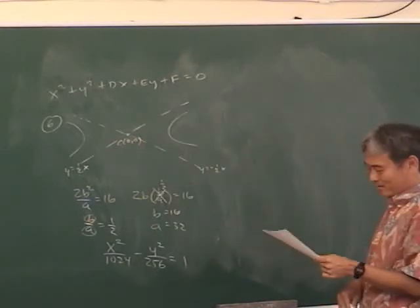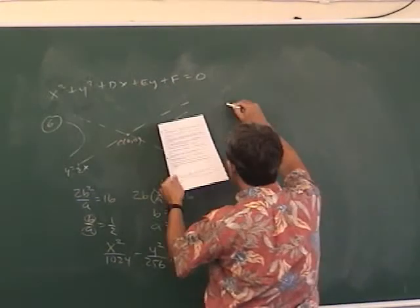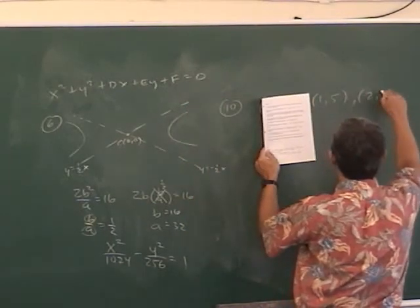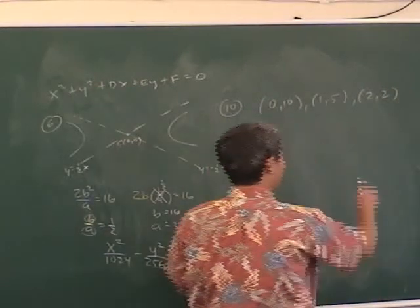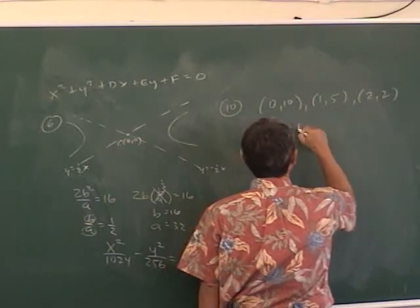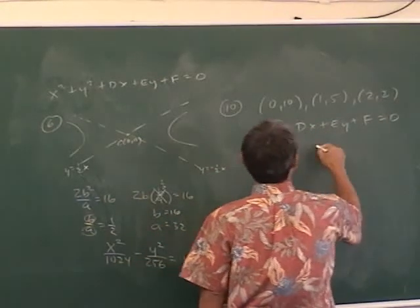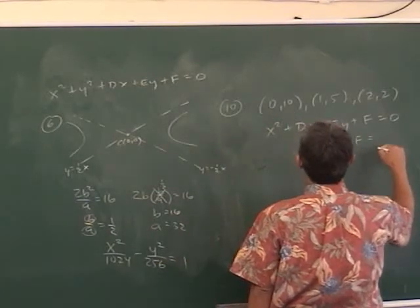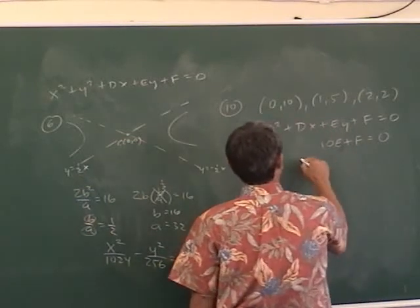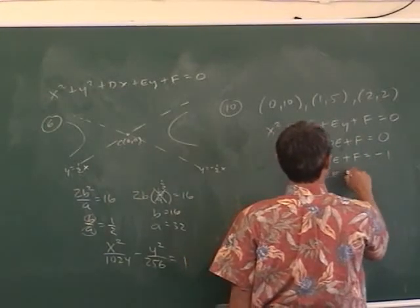Number ten — find the focus of a parabola with three points. This is an up-and-down parabola, so plug into the equation x² + dx + ey + f = 0. Take the three points and plug in: from (0, −10) you get 0x + 10y + f = 0... wait, −10e + f = 0. From (1, −5): d + (−5)e + f = −1. From (2, −2): 2d + (−2)e + f = −4.